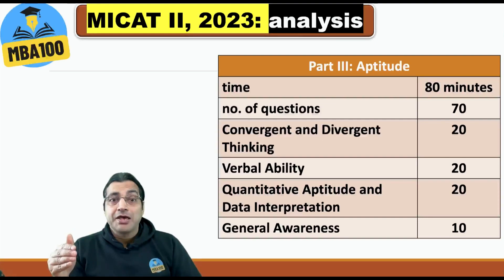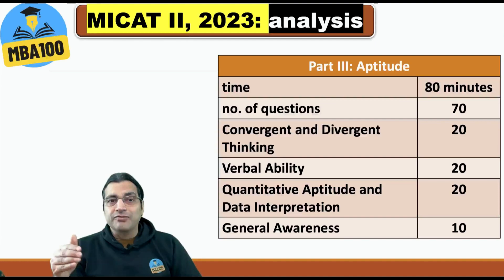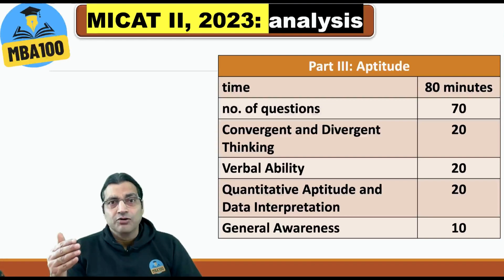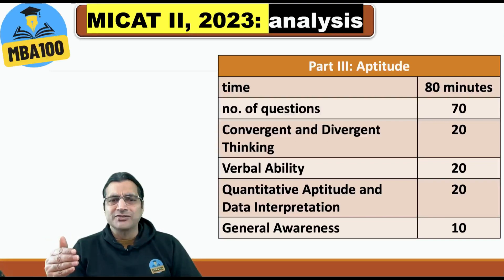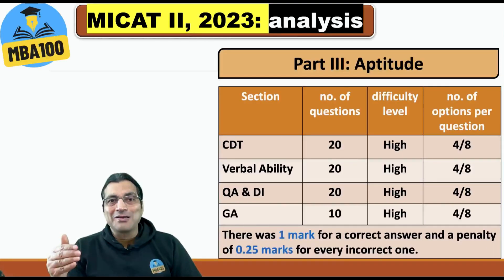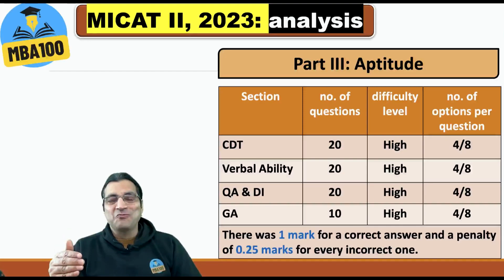Part 3 is aptitude. Convergent and divergent thinking: 20 questions. Verbal ability: 20 questions. Quantitative aptitude and data interpretation: 20 questions — 4 of those were on data interpretation and remaining 16 on quantitative aptitude. We had lots of questions on geometry and mensuration. General awareness: 10 questions. The level of difficulty of each section was high.